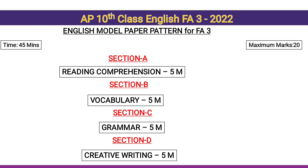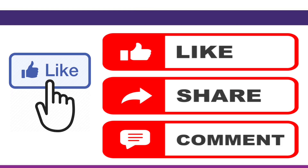This is the model paper pattern for FA3 English language. Section A: Reading Comprehension for five marks. Section B: Vocabulary for five marks. Section C: Grammar for five marks. Section D: Creative Writing for five marks. Total: twenty marks.